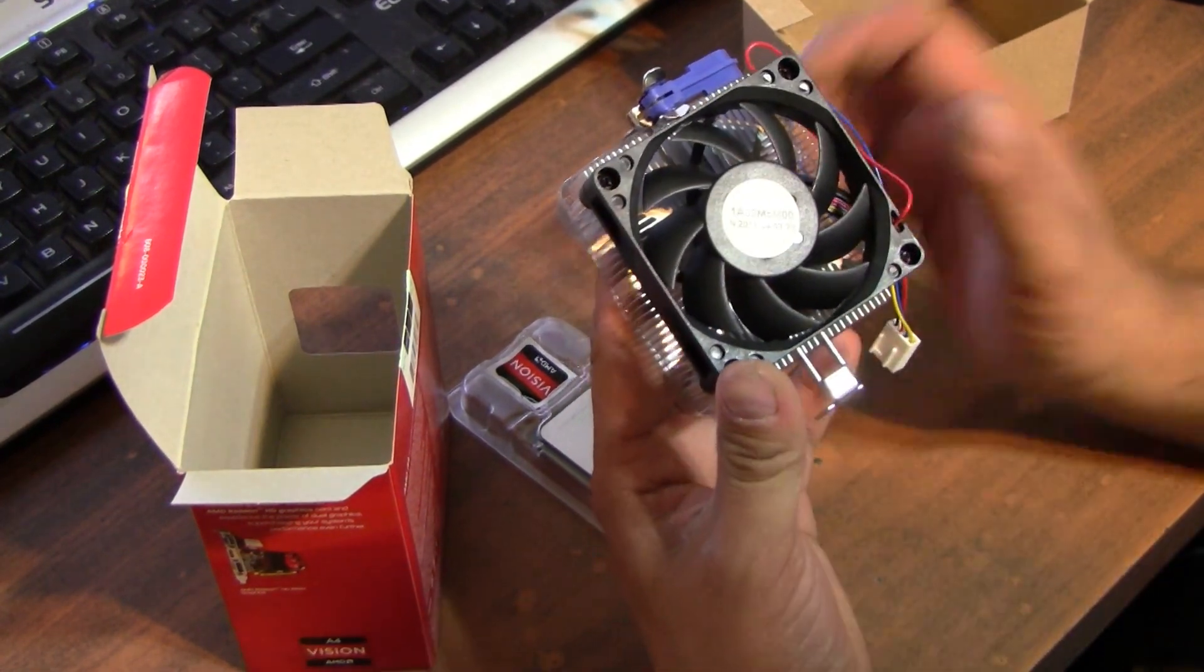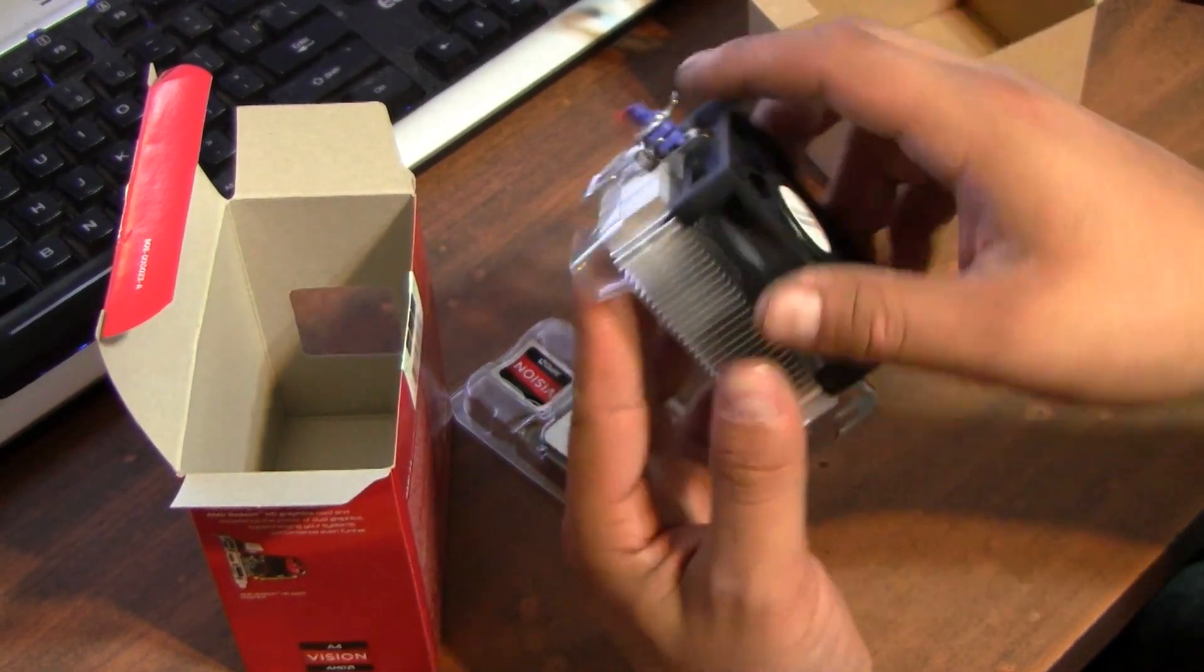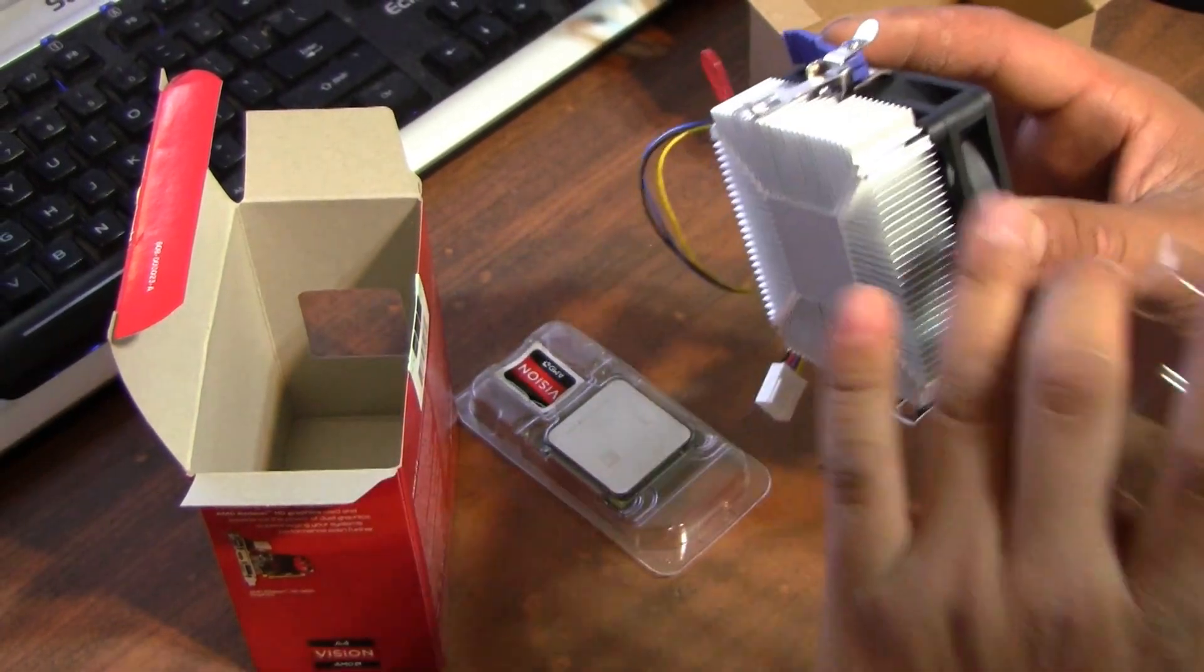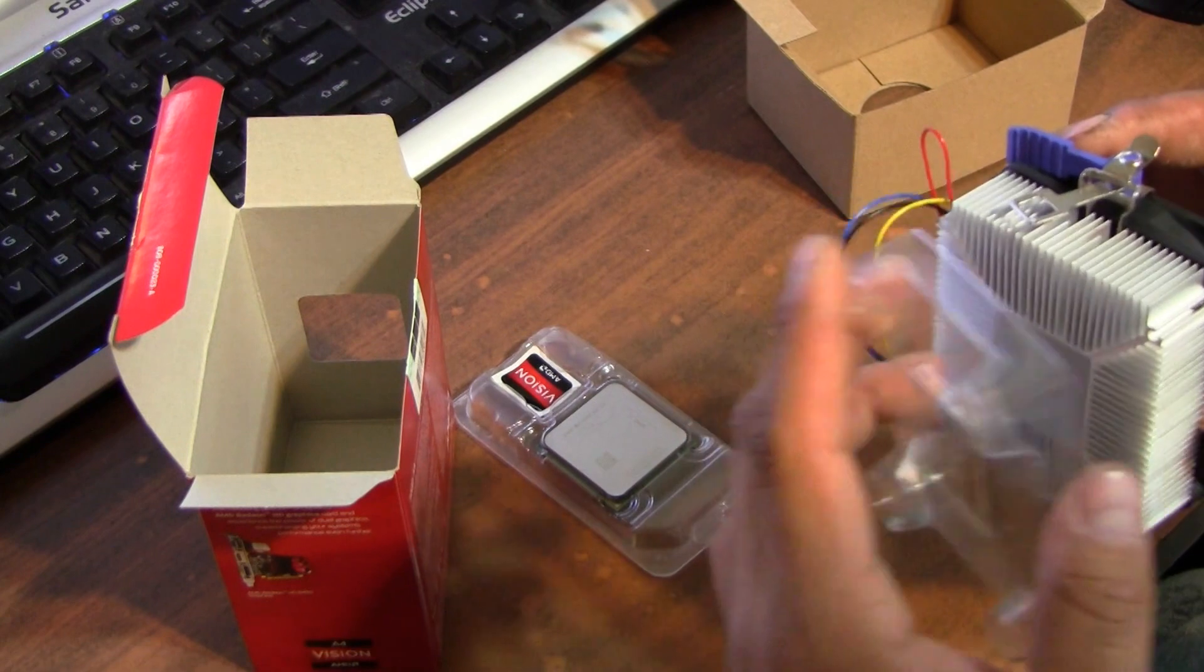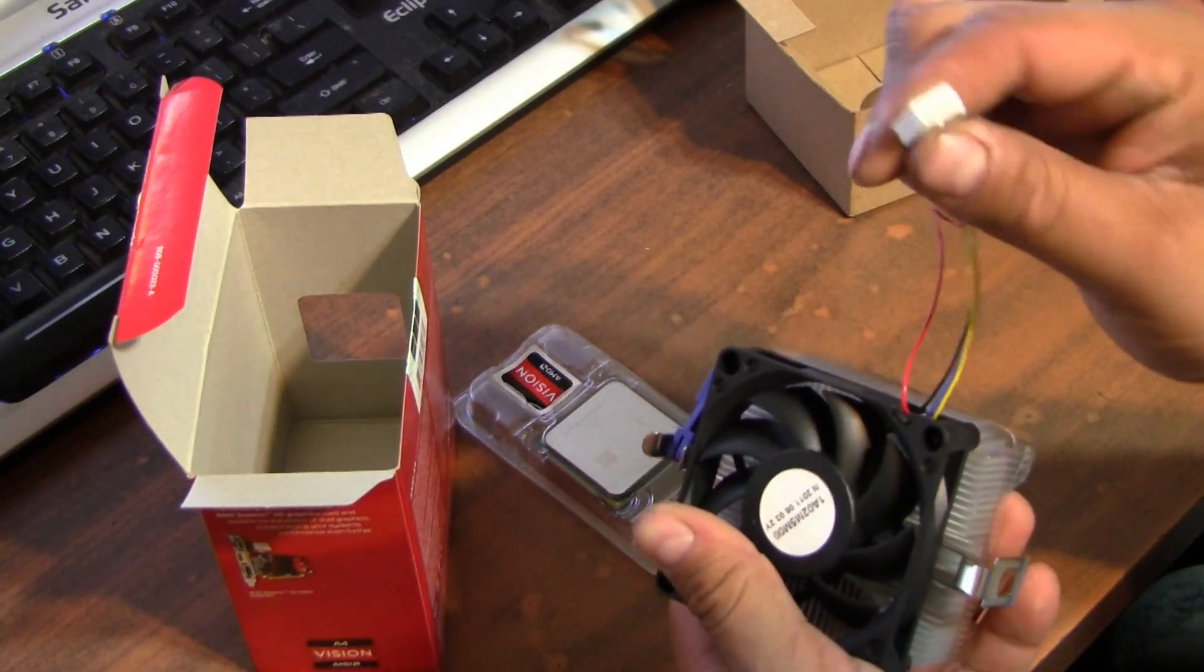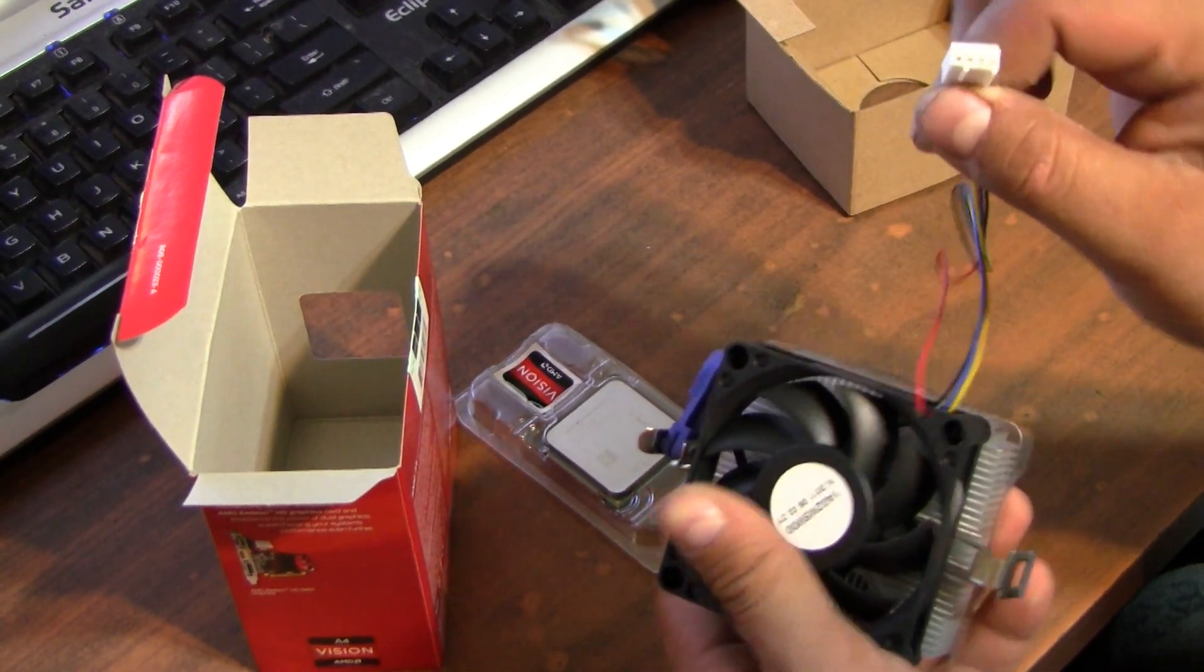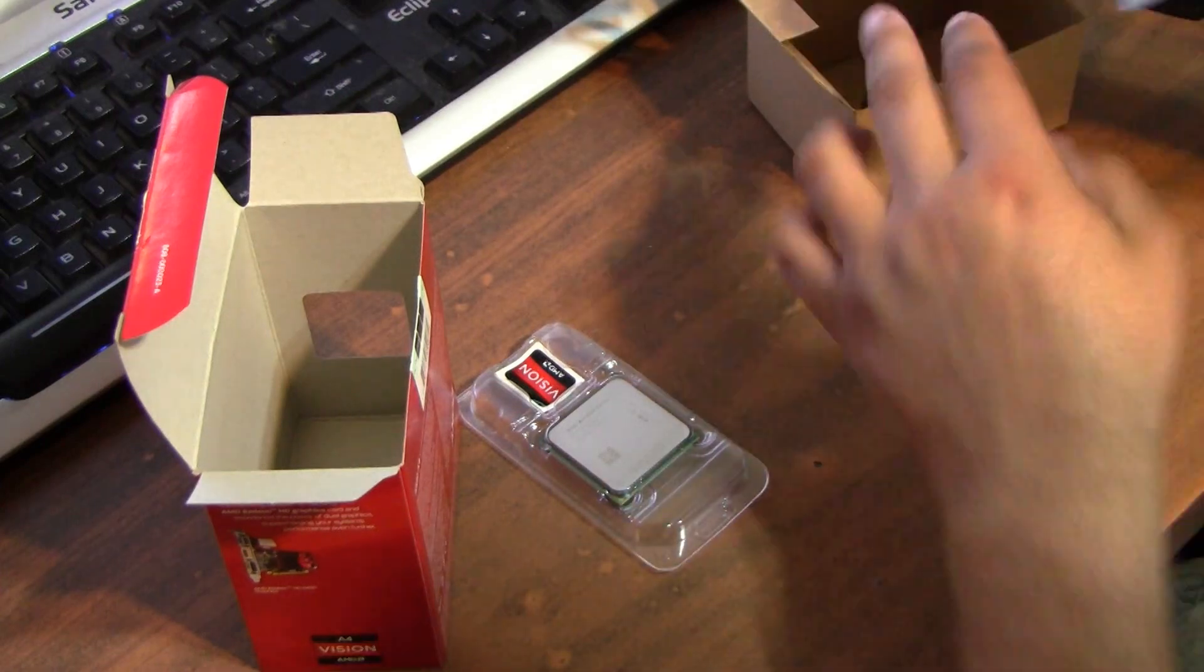So here's the fan, very small fan. It comes with the thermal paste already applied. It's all aluminum fins, I don't see any copper heat pipes whatsoever. And of course your 4-pin CPU fan header. And that's it, that's all it comes in the box.